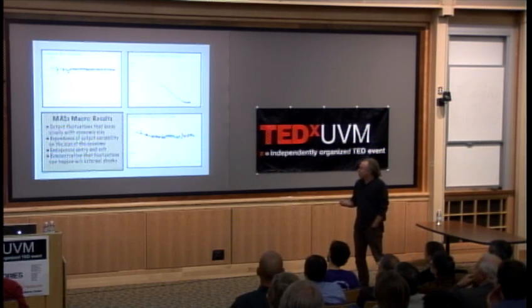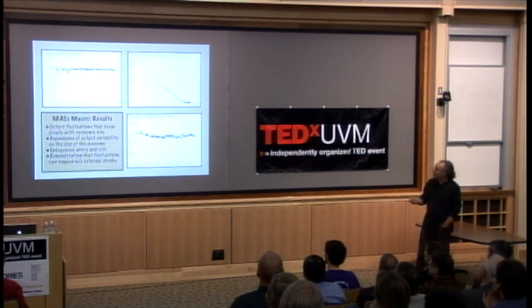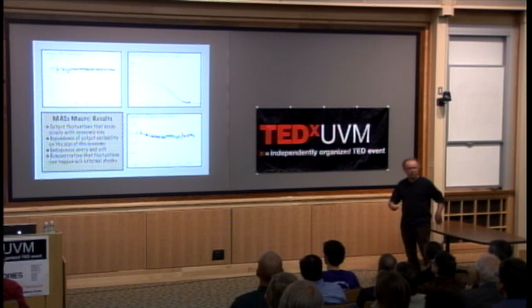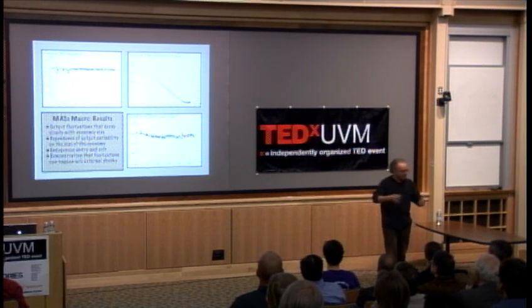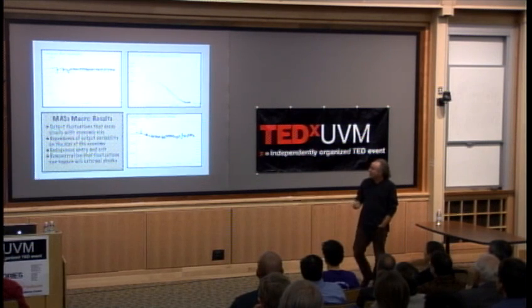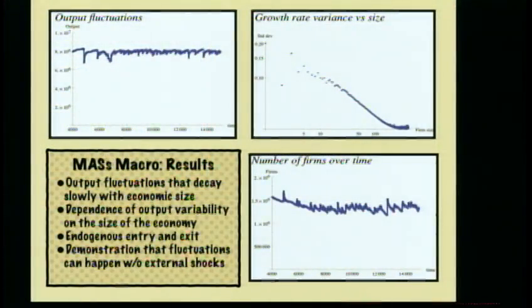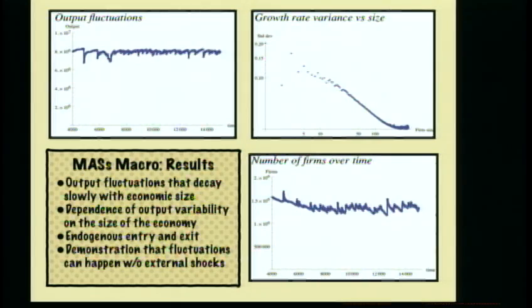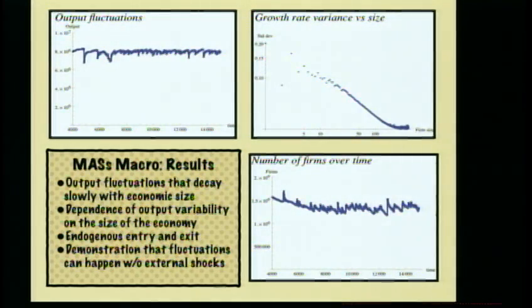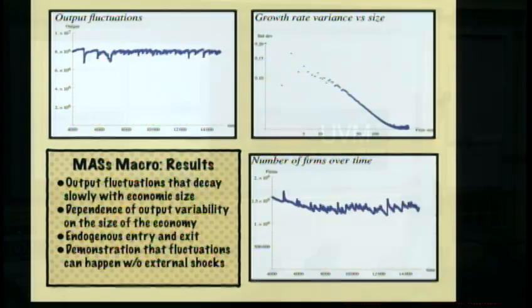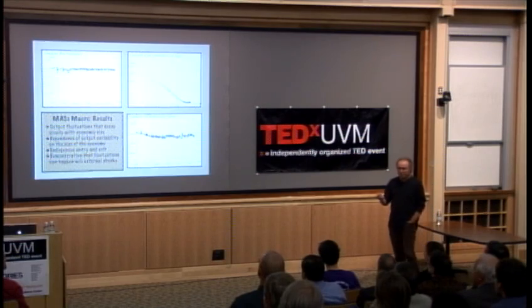Just to show some time series for the model: the main point from the perspective of macroeconomics is that we get output fluctuations in these models. Even though they're rendered with 150 million agents, you might think the law of large numbers would wash out all dynamics. But in fact there are significant fluctuations — on the order of 5 to 10% — that happen on a regular basis, partly because the number of firms is changing over time as firms enter and leave markets. This is very different from conventional macroeconomics: we don't have to shock the model from outside; the model produces its own endogenous dynamics.